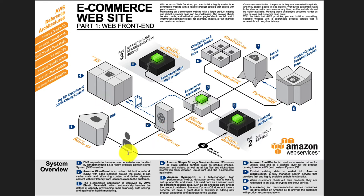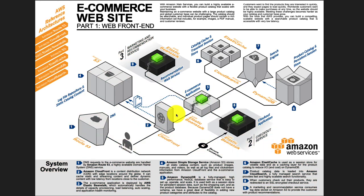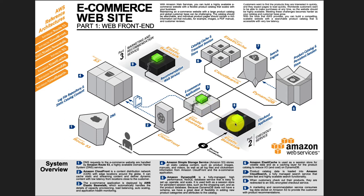A lot of the images come via CDN. What to show is determined by inputs from the recommendation service — the web server decides based on your history, your session, and your login information which products would interest you. That is presented to you via the front-end. And then once you put items in the cart, you initiate the checkout process, which is handled by the checkout application.